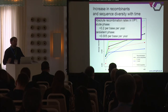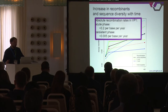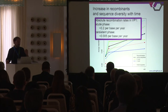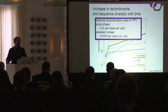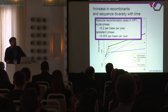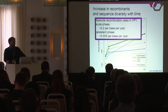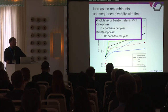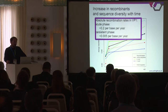Interestingly, we can estimate the absolute recombination rates during the infection, under some assumptions. During the acute phase, the recombination rate we estimate is as large as 0.2 per base per year — that is impressively large. And even during the persistent phase, the numbers are about 5 per mil per base per year, which is still a very sensibly high recombination rate.